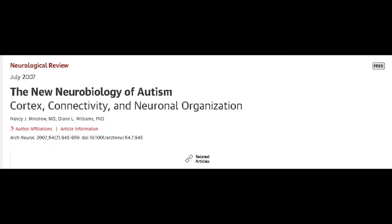To quote the work of Min Xu and company in 2007: the evidence supports autism as a disorder of the association cortex, both its neurons and their projections. In particular, it is a disorder of connectivity which appears from current evidence to primarily involve intra-hemispheric connectivity.